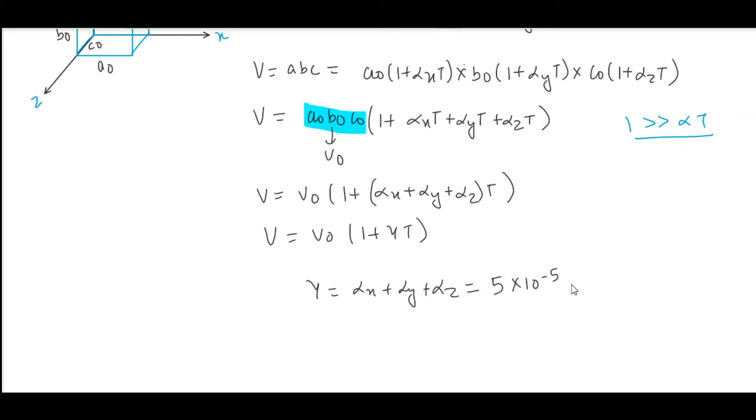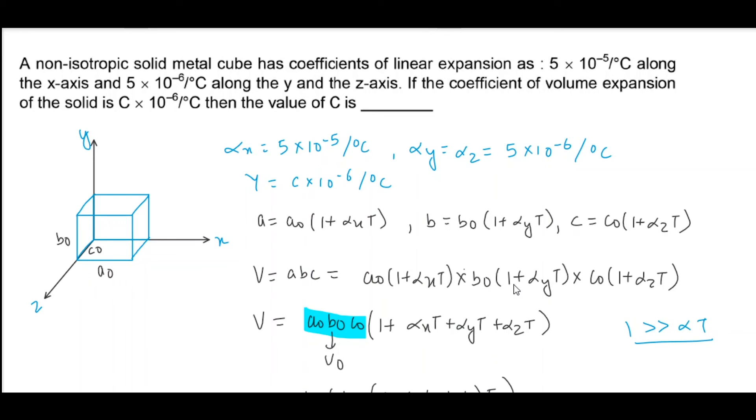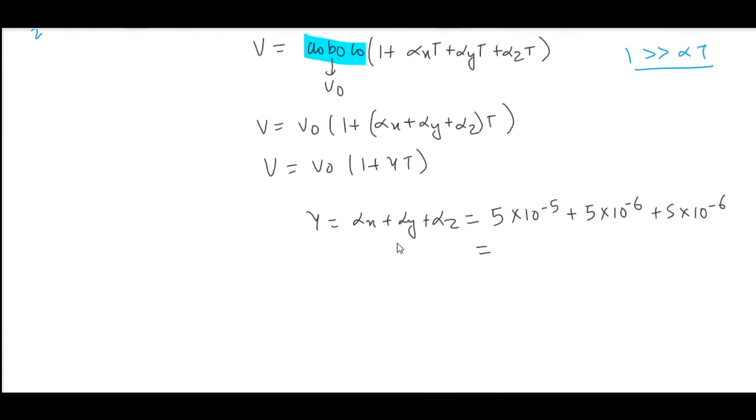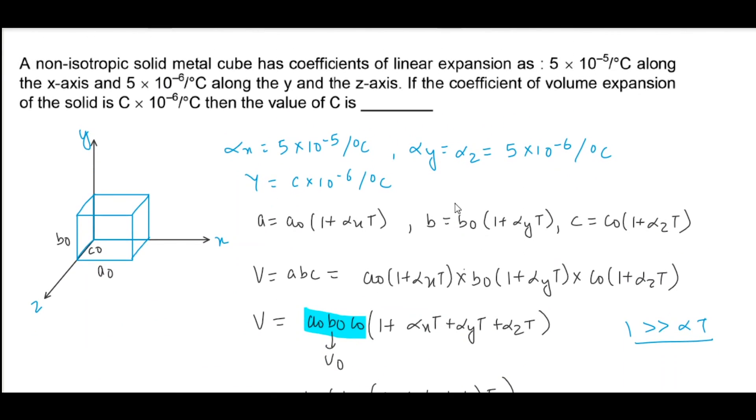Gamma equals 5 into 10 raise to minus 5 plus 5 into 10 raise to minus 6 plus 5 into 10 raise to minus 6, which equals 60 into 10 raise to minus 6. This is c, so the required answer would be 60.